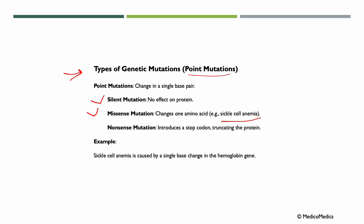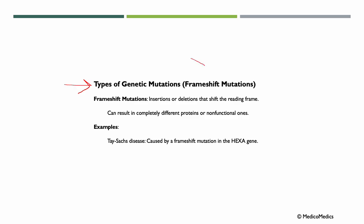This leads to misshapen red blood cells. Then we have nonsense mutations, where a single nucleotide change creates a premature stop codon, leading to an incomplete and usually non-functional protein. This can cause severe genetic disorders. An example is sickle cell anemia, caused by a single base change in the hemoglobin gene. Moving on to frameshift mutations: these occur when nucleotides are inserted or deleted from the DNA sequence, altering the reading frame of the genetic code.